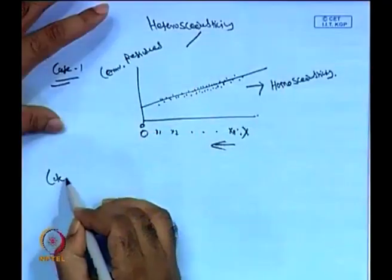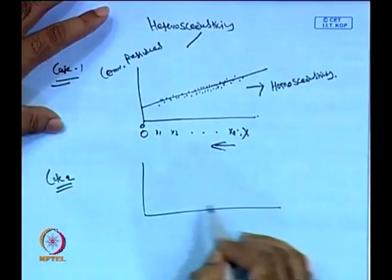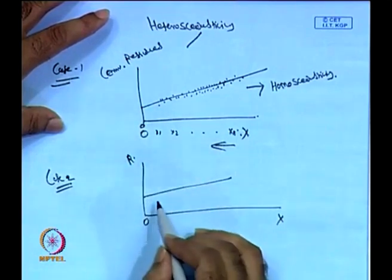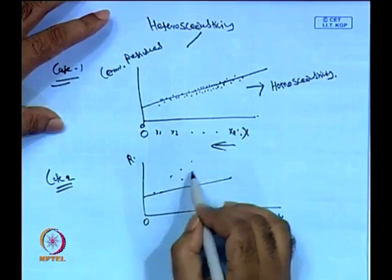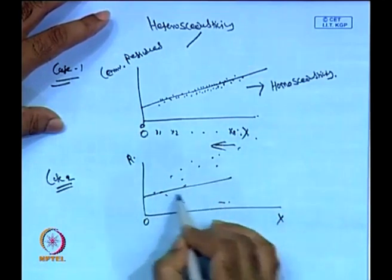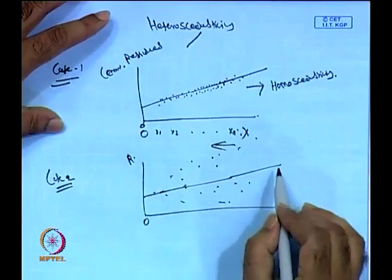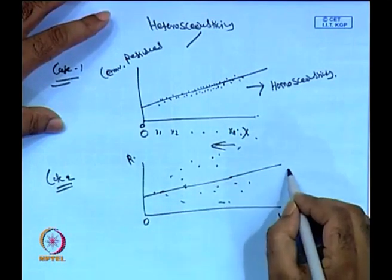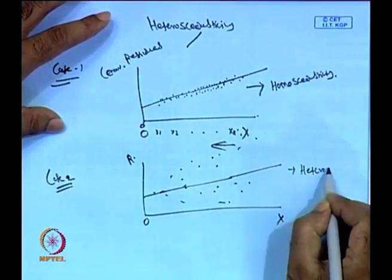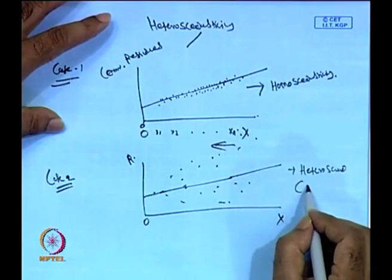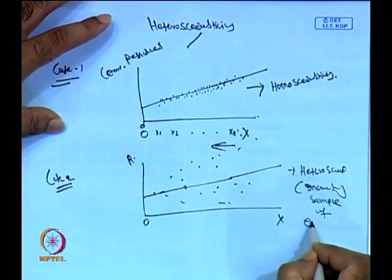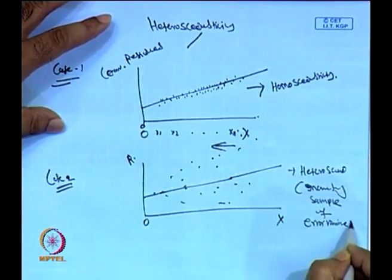In another case, with the same structure plotting X against residuals or error terms, if the errors are coming in a fan-like pattern expanding outward, then there is a heteroscedasticity problem. This represents an increasing sample of error variance — the error variance grows with X.